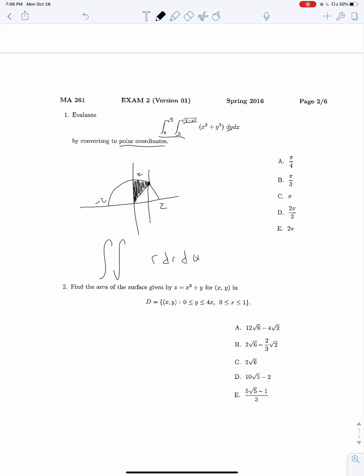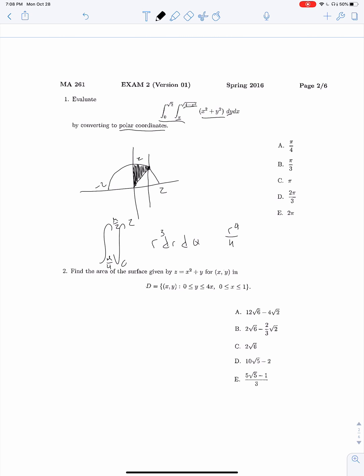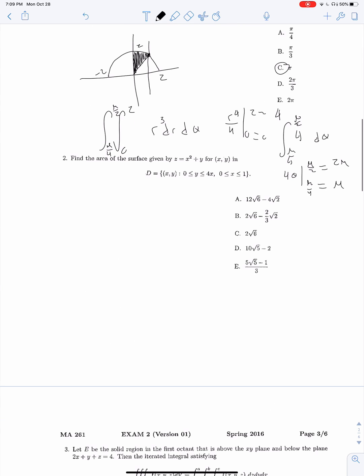We can set up our r dr d theta integral now. Theta is running from pi over 4 to pi over 2, whereas r is running from 0 to 2. We know that x squared plus y squared is r squared, so this is going to be r cubed. Integrating with respect to r, we get r to the 4th over 4 on 0 to 2. At 2, this is 16 over 4, so 4. And 4 integrated from pi over 4 to pi over 2 is just 4 theta. Solving, we get pi.